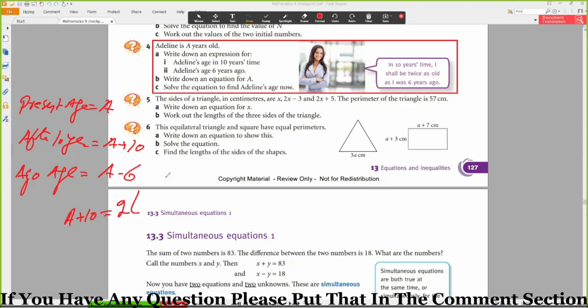Six years ago was a minus 6. So it means that after 10 years her age will be two times her age six years ago.